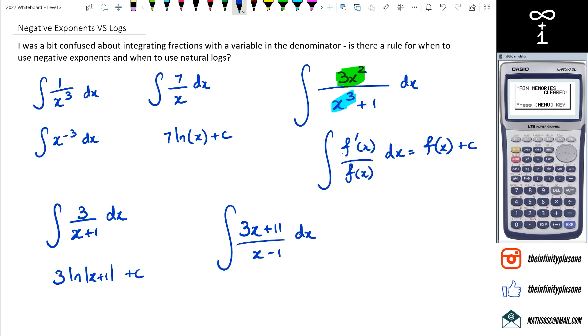Like so, I tend to use long division. I would actually go 3x plus 11 and multiply it by 3, so I've got 3x minus 3. So 3x take away 3x is 0, 11 take away negative 3, so then this would end up being 14.